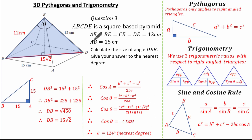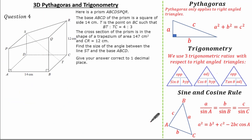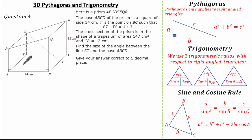So you had a couple of different options to work out angle DEB — it doesn't make a difference as long as you show correct structured working out. Now let's look at another exam question with another type of 3D shape. Here's a prism ABCDSPQR where the base ABCD is a square with each side being 14 centimetres. Point T lies on line BC such that BT to TC is in the ratio 4 to 3. The cross-section of the prism is a trapezium with area 140 cm squared, and CR is 12 centimetres. We need to find the angle between line ST and the base ABCD, correct to one decimal place.